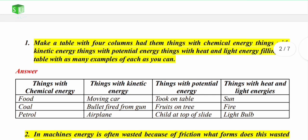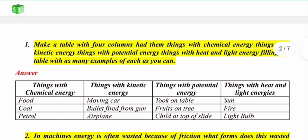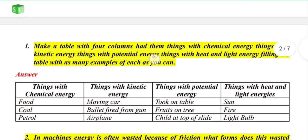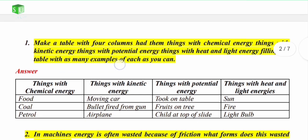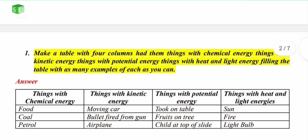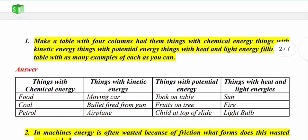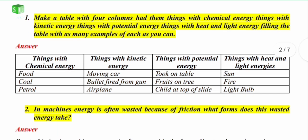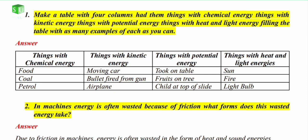Let's start with question number 1. Question number 1 asks you to make a table with 4 columns — columns means vertical lines. You should make a table with 4 vertical columns.